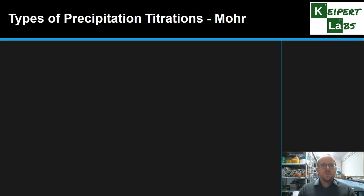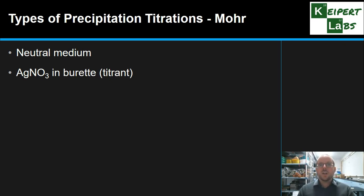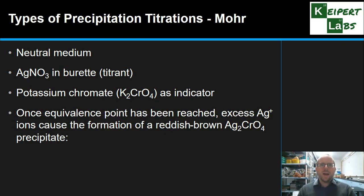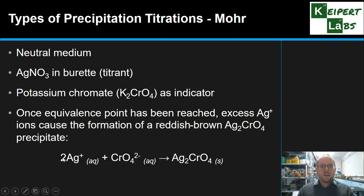There are three different types or variations of this type of titration. The first one is called the Mohr method. It involves a neutral medium, with silver nitrate in the burette — that is, it's the titrant, the thing added from the burette. Silver nitrate is added into a solution containing the halide ions. We use potassium chromate dissolved in the flask as an indicator. We get the silver halide precipitate forming, but once we've reached the equivalence point and we're adding excess silver ions, we get a reddish-brown silver chromate precipitate because it's highly insoluble. So the reaction goes from the formation of a white precipitate to this additional reddish-brown colour.